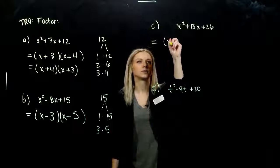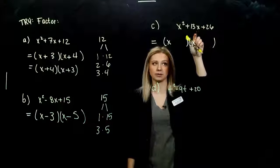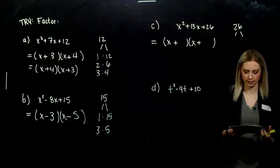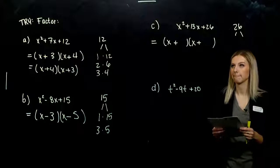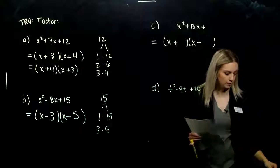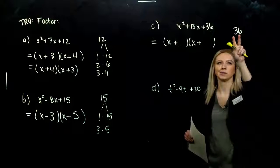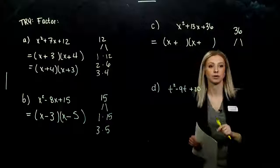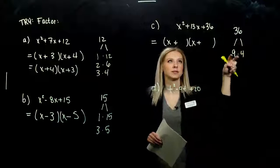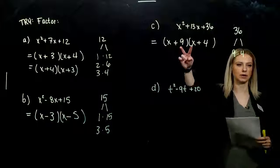Part C. Again, a 1 out on the front, so it's going to be x and x. I need to add to be positive and multiply to be positive, so both signs are positive. We need to break up 36 into factors that multiply to 36 and add to 13. Let's look: 9 and 4 — multiply 9 times 4 we get 36; 9 plus 4 we get 13. So those are our factors. It helps to write the problem down correctly. We can FOIL it out and check, and the order doesn't matter.